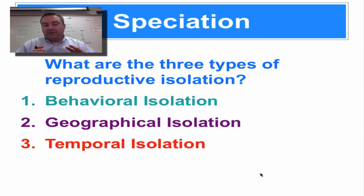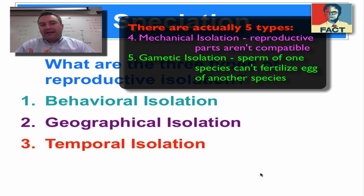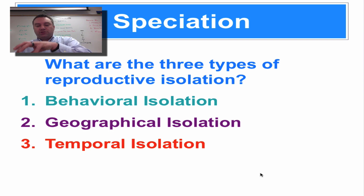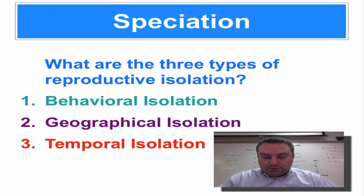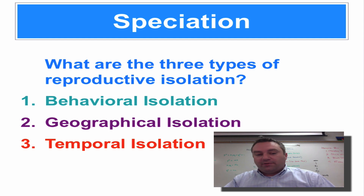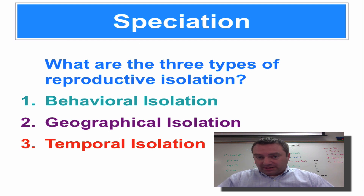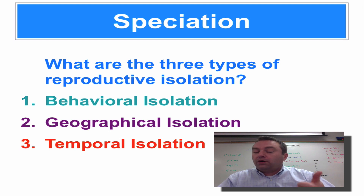There are three main types of reproductive isolation. The first is behavioral isolation, where certain mating behaviors keep one population from mating with another. The second is geographical isolation — one of the main factors we saw in Darwin's finches, where each finch was on a different island. Mountains, the Great Lakes, and oceans can also separate populations. The third is temporal isolation, where different populations mate at different times of the day, month, or year.